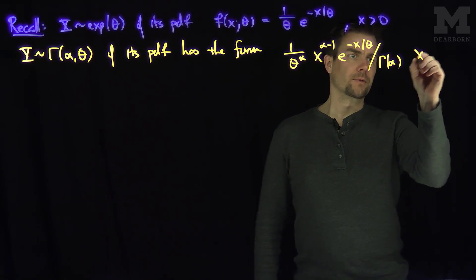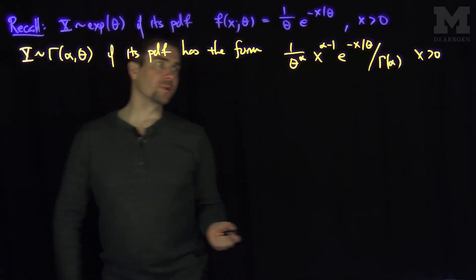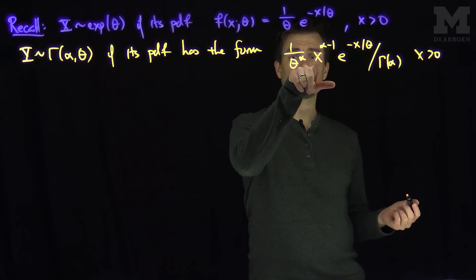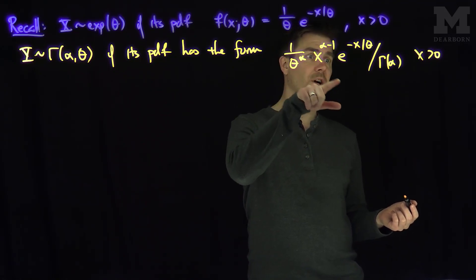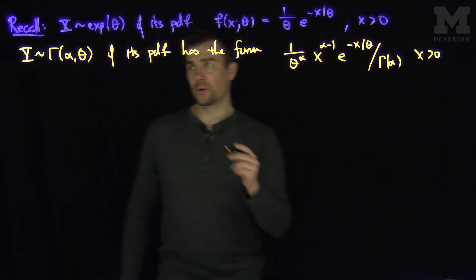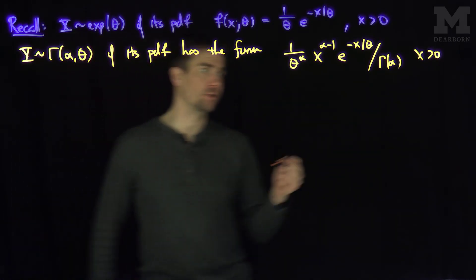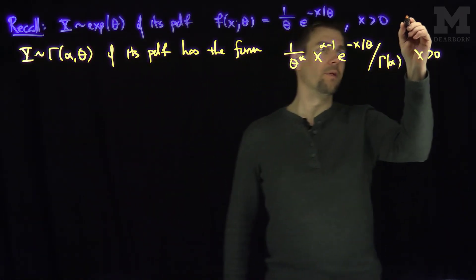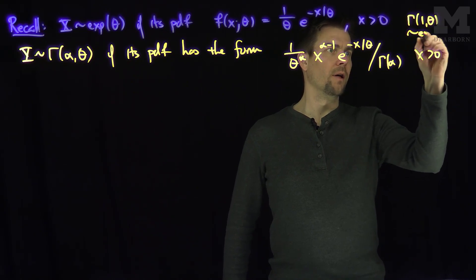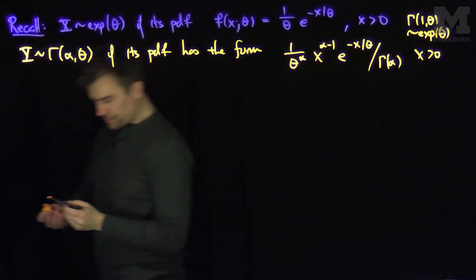This is for x greater than zero. We can see that if we plug in alpha equals 1, this reduces to an exponential distribution. In particular, gamma(1, θ) is the same distribution as exponential(θ).